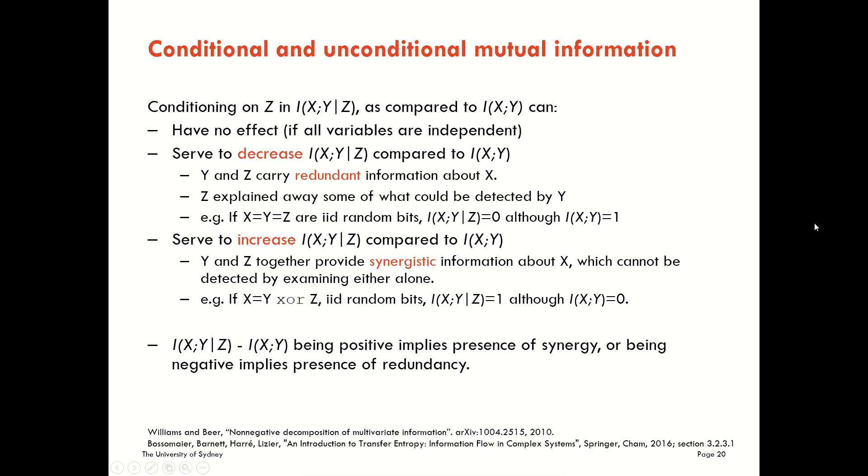The classic way people used to look at these increases or decreases was to simply take a net of those terms, and we call this net synergy. This difference, or a negative value of it, have been known by various names over the years, including co-information, interaction information, integration, and so on. Whatever you want to call it, what's clear here is that if this term is positive, it implies the presence of synergy, or if it's negative, it implies the presence of redundancy.